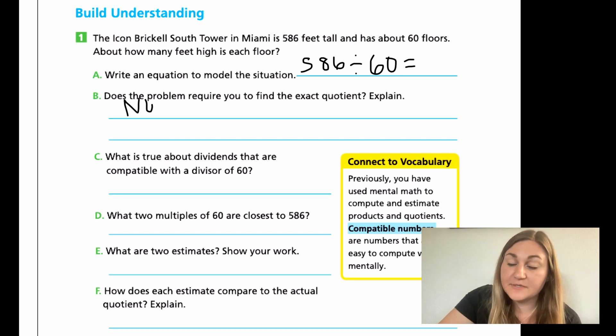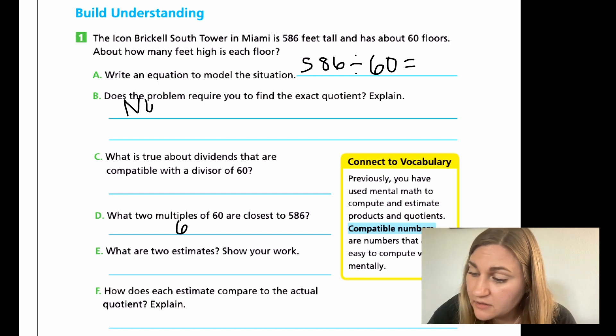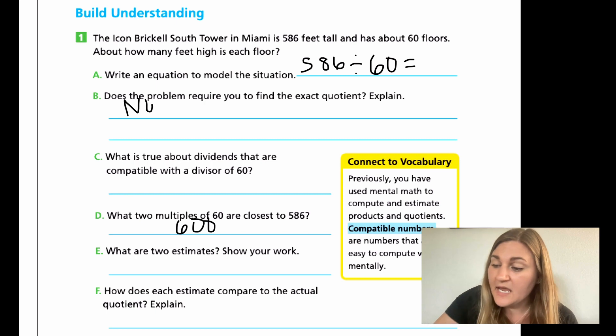Hopefully you had time to do D and E. What two multiples of 60 are closest to 586? Well, I know 586 is pretty close to 600. So I'm going to say 600 is on the larger end. And that was 60 times 10. That means on the other end, on the smaller end, is going to be 60 times 9.